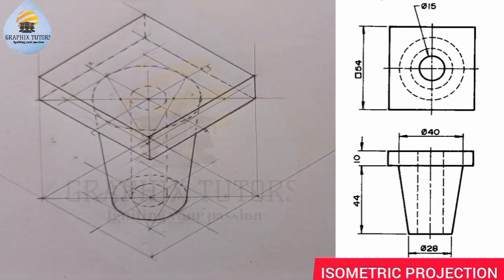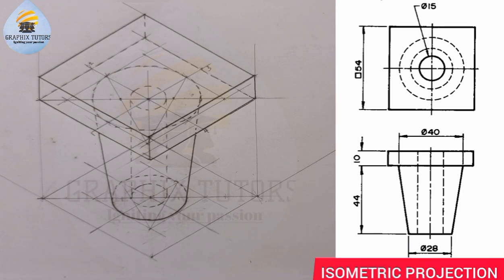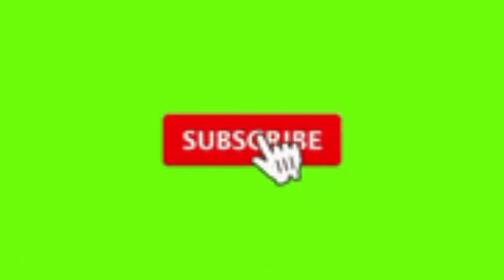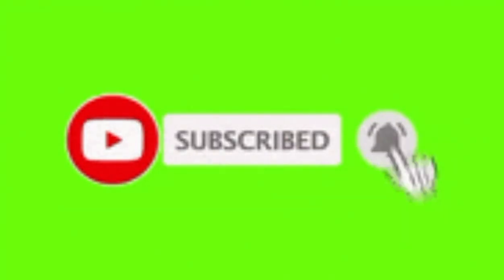We have successfully reproduced the figure you can see on the right side of the screen in isometric projection, showing all the hidden features. You may choose to include or exclude the hidden lines — either way is correct. If you found this video helpful, please don't forget to like, subscribe, and share the video. Thanks for watching.